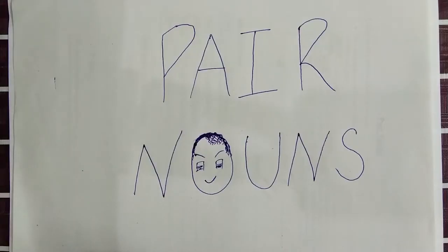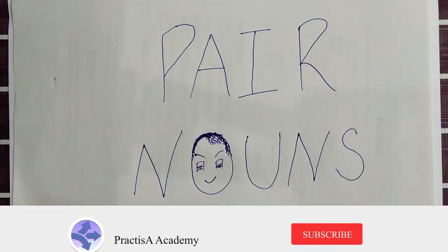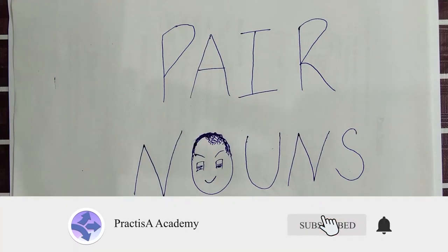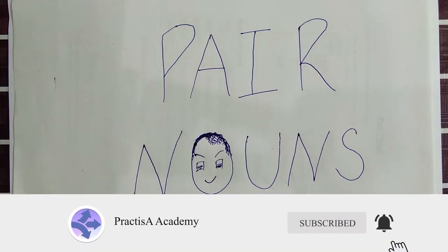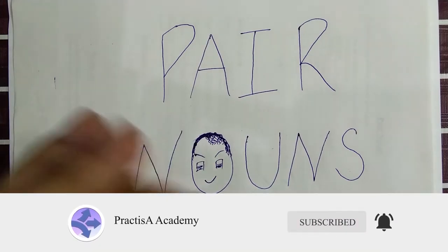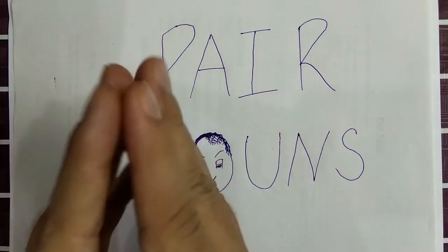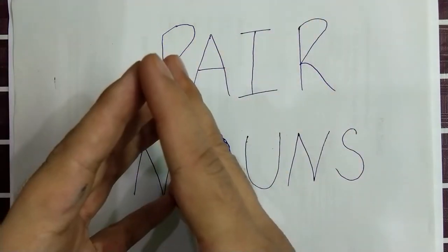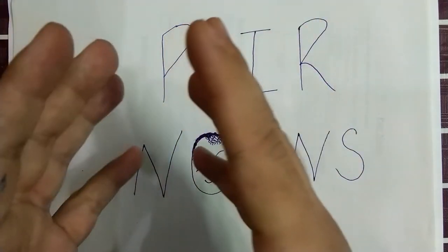English is quite easy when it comes to singular or plural, am I right? But there is a flip side of the coin. Welcome to Practice the Academy. Today we'll learn pair nouns. What is meant by 'pair'? In simple English, it means a set of two things used together.